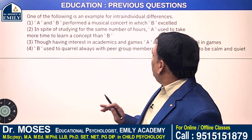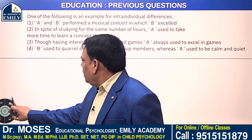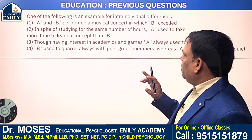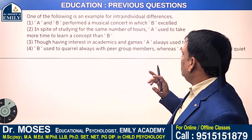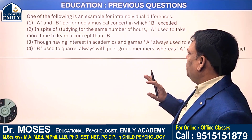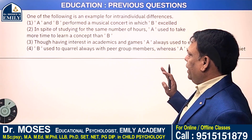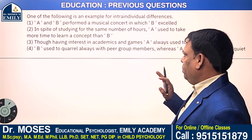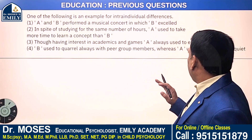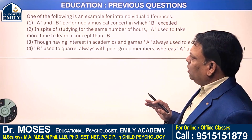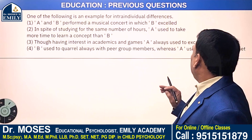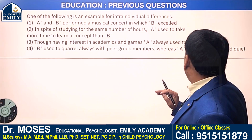One of the following is an example for intra-individual differences. Option 1: A and B performed a musical concept in which B excelled. Option 2: In spite of studying for the same number of hours, A used to take more time to learn a concept than B. Option 3: Though having interest in academics and games, A always used to excel in games. Option 4: B used to quarrel always with peer group members whereas A used to be calm and quiet.